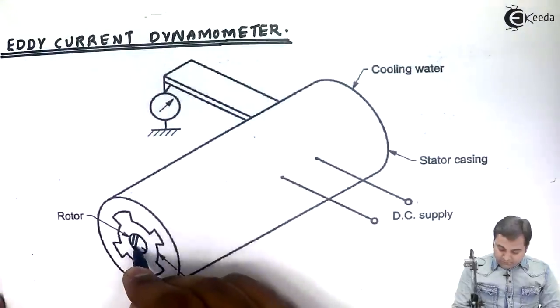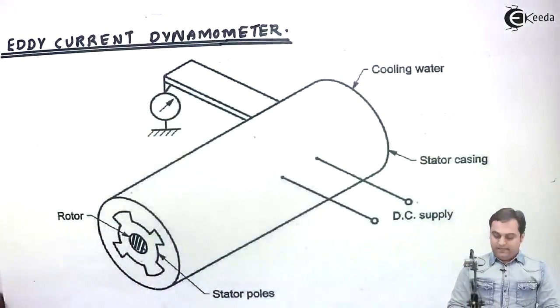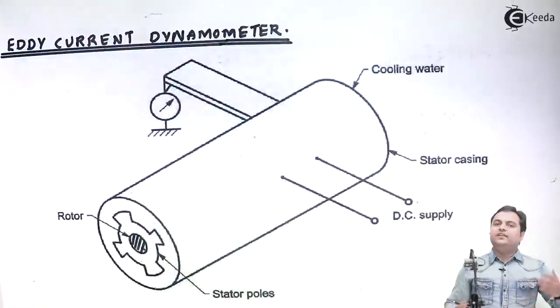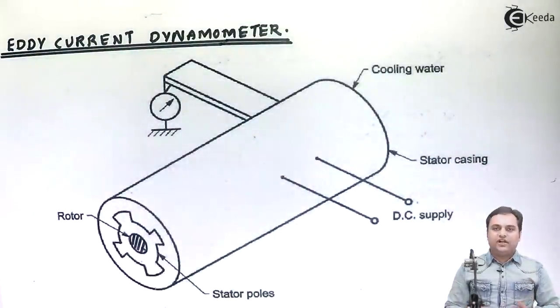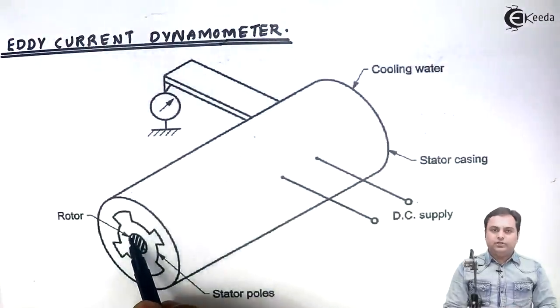The rotor is the shaft whose power we want to measure. It can be a crankshaft or any other shaft - machine shaft, engine shaft - any shaft whose power is to be measured, that we are taking as the rotor.